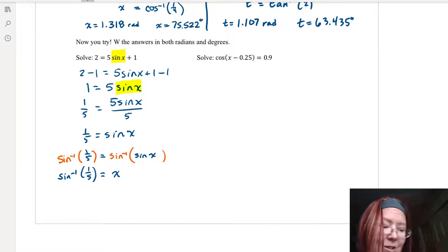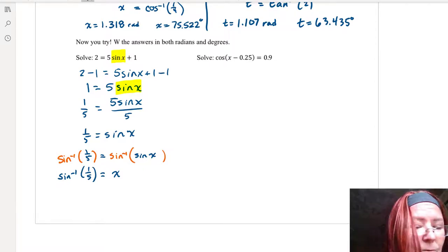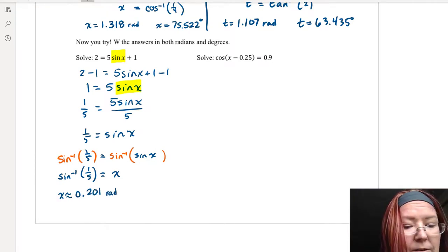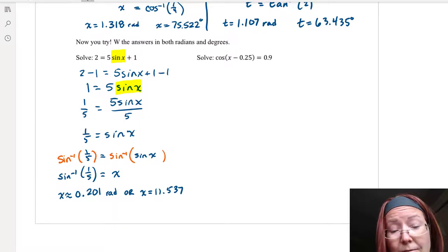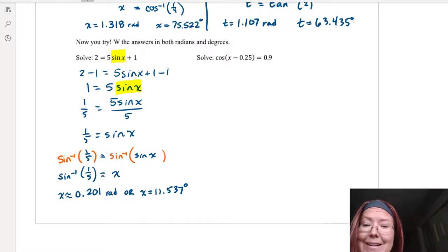And so I just need to calculate inverse sine of 1 fifth. The inverse sine of 1 fifth in radians is going to be 0.201. And then switching to degrees, I have 11.537 degrees. So two answers there, depending on whether I have radians or degrees.